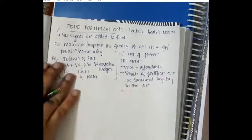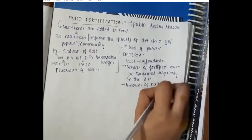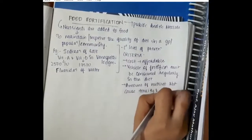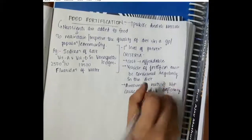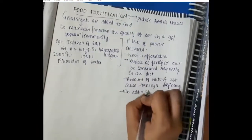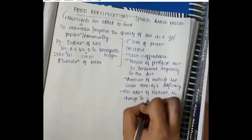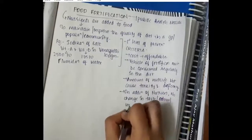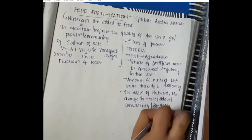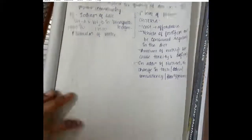The amount of nutrient should resolve the deficiency but should not cause toxicity, so it should be in sufficient amounts such that it does not cause toxicity. On addition of nutrients, there should not be any change in taste, odor, consistency, or appearance of the substance. If the taste, odor, or anything changes, then that will make the food not easily edible in the society.